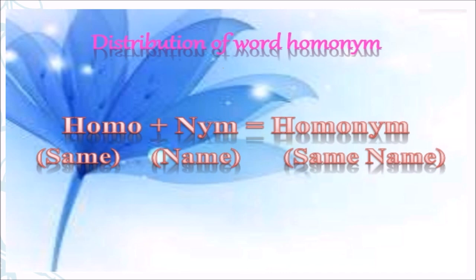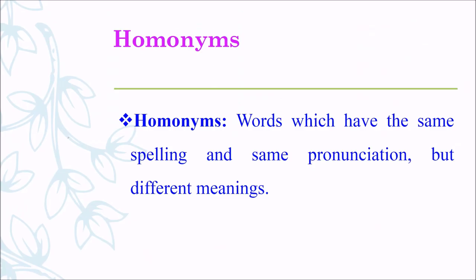Next, we are going to revise homonym. Homonym is made of two words: homo plus nym. Homo means same, nym means name. Combining them, it becomes words having same names. So what is meant by homonyms? Words which have the same spelling and same pronunciation but different meanings.